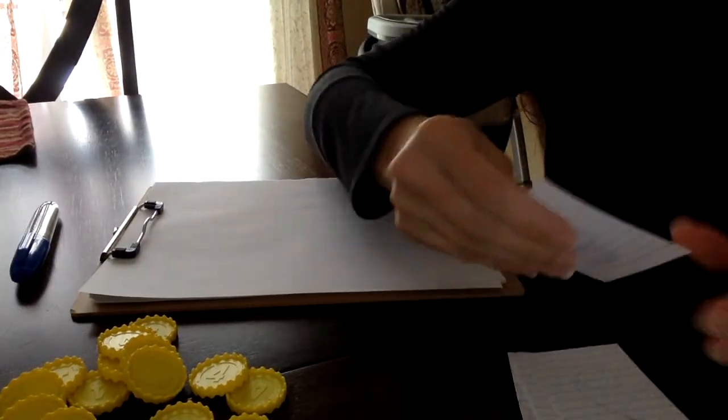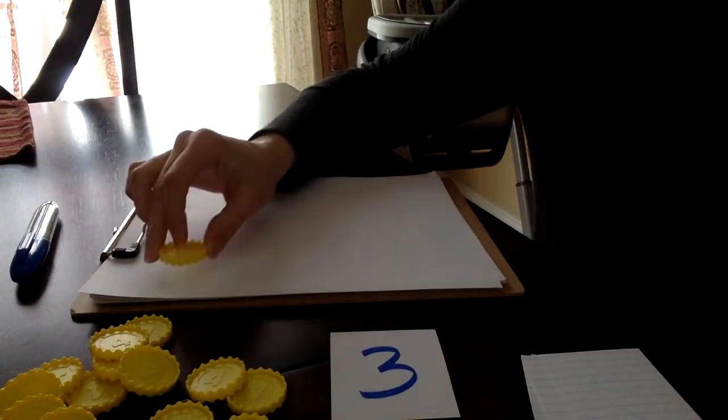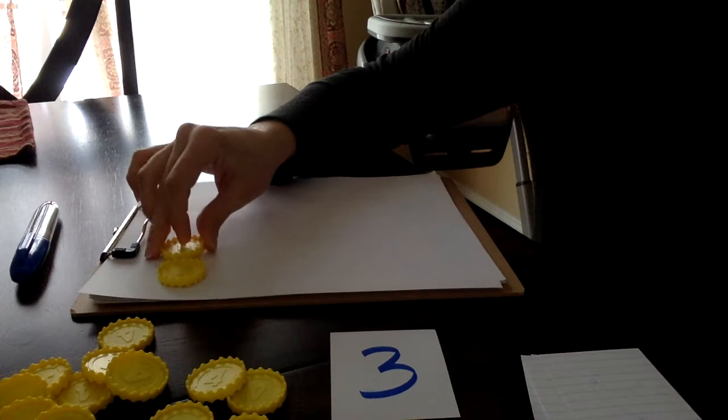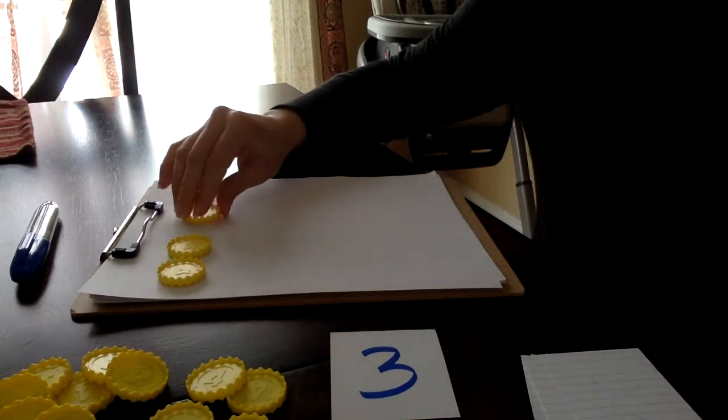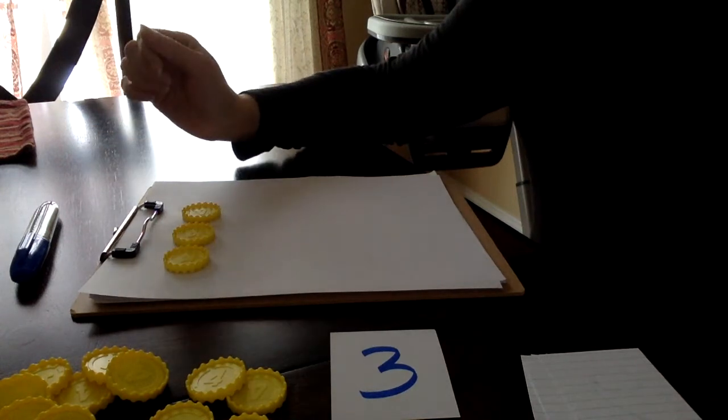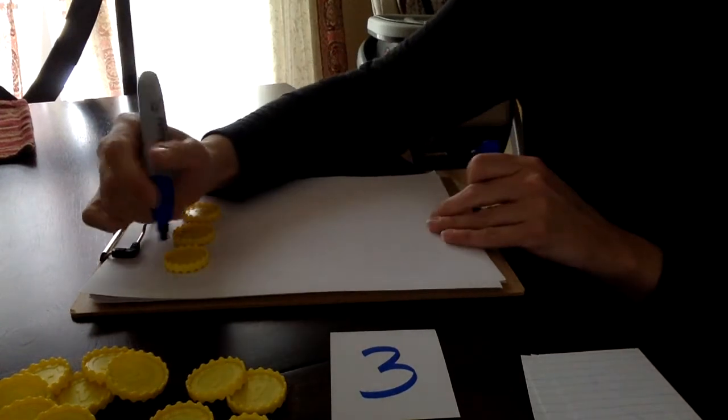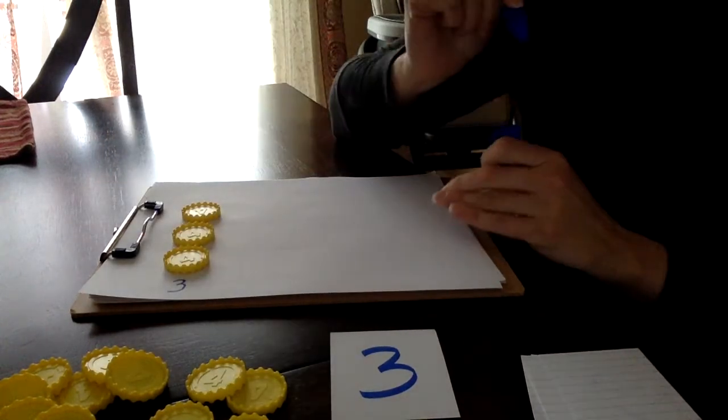So the first thing I'm going to do is I'm going to pick my first number. So my first number is 3. I'm going to put 3 in a line and then I'm going to count 1, 2, 3. After I count my 3, I'm going to take my marker and I'm going to write my number 3.